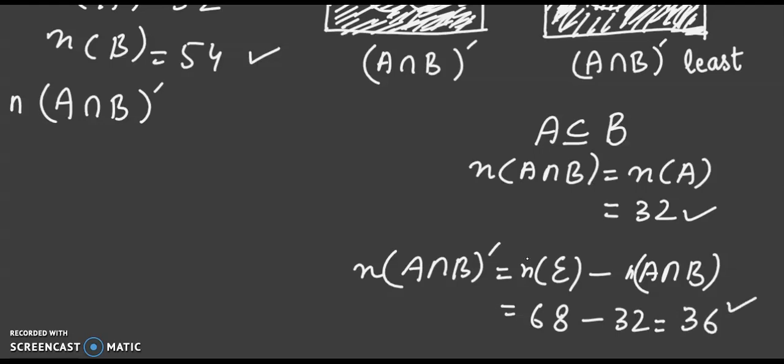So this is the least number of elements that A intersection B whole complement can have. And why is that? Because we are considering this Venn diagram to solve this question. Thank you so much. I hope that you found this question interesting.